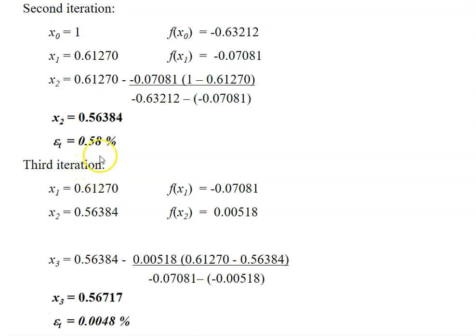And for the third iteration, you are using the one that you have just calculated for your x2 and x1 remain to be 0.61270 and so on and so on. If you need the fourth iteration, so your two initial guesses will be 0.56384 and 0.56717.